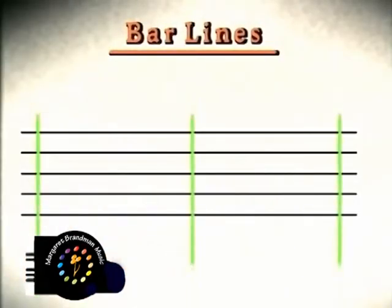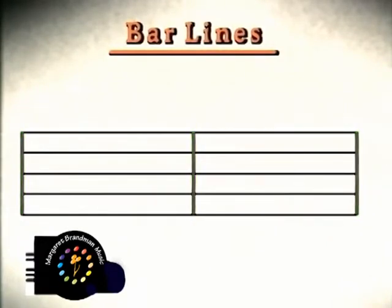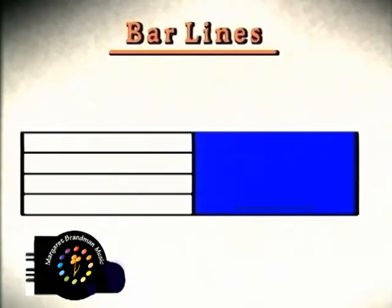The upright lines which divide the staff into sections are known as bar lines. The areas between them are known as bars or measures.